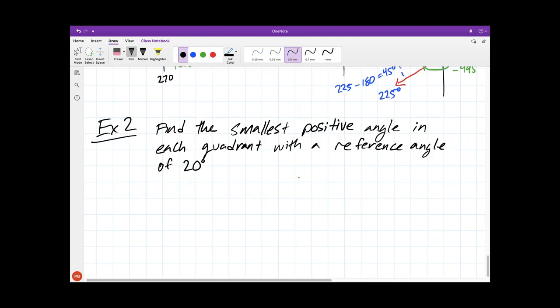Find the smallest positive angle in each quadrant with a reference angle of 20 degrees. Here we've got four quadrants, we know we'll have four answers. It's really helpful to draw a picture.